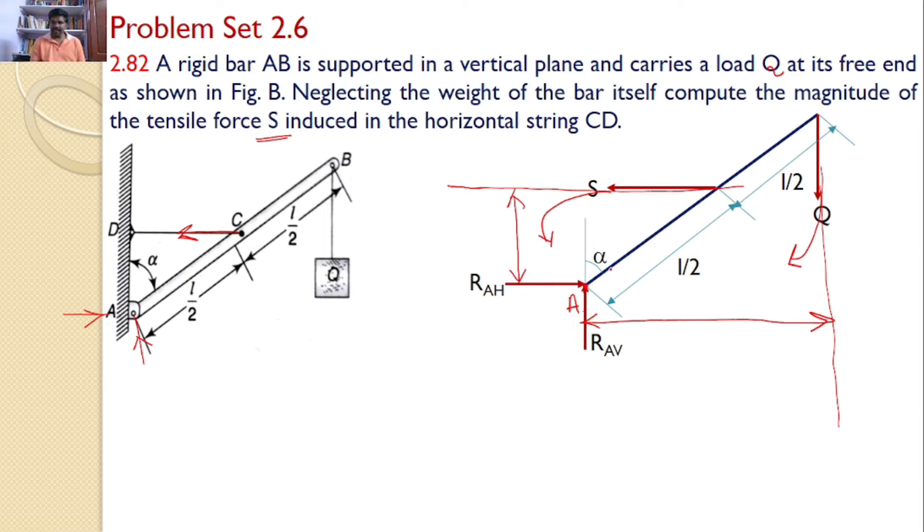By considering this right angle triangle, I can say this angle is alpha, hence this angle is alpha. This distance, by considering this right angle triangle, is L sin alpha because it is the opposite side. Now, by considering this right angle triangle, I want this height. This height you can calculate as L by 2 cos alpha.